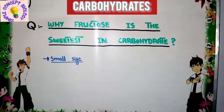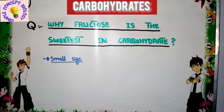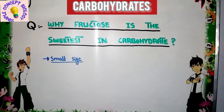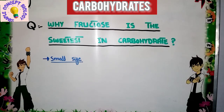Among carbohydrates, the sweetest is fructose. Why is fructose the sweetest carbohydrate? The reason is that fructose has a small size. When size is small, it is easy to interact with our taste receptors, making it easier to perceive sweetness. That is why among all carbohydrates, fructose is the sweetest.